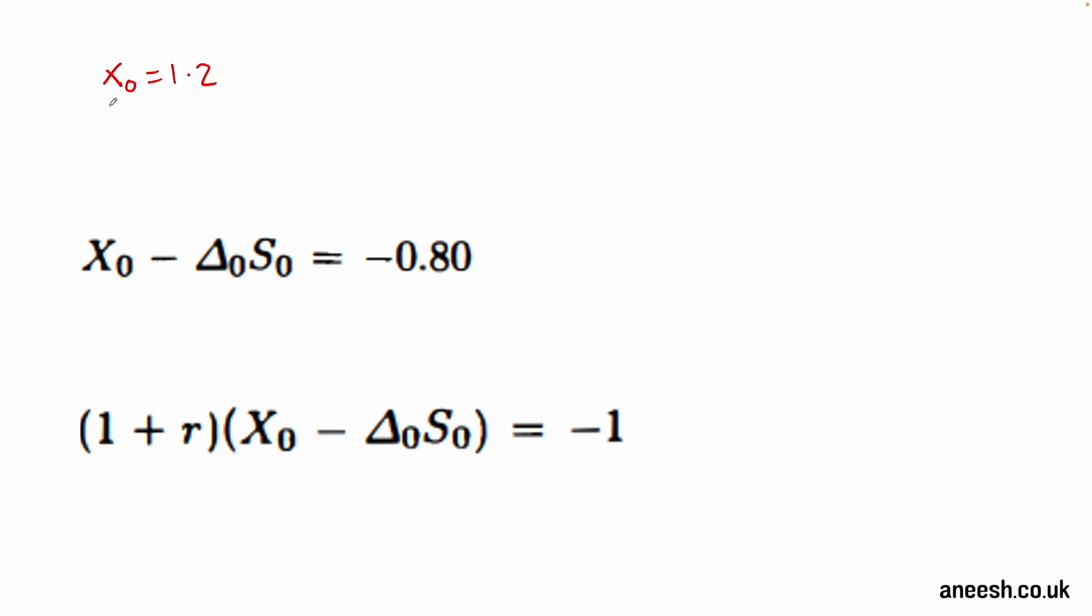As a result, delta 0 is 0.5 and S0 is still 4. We therefore need 2 to be able to buy half a stock. This means we need to borrow 0.8 from the money market at an interest rate of 1.25 to make up the remaining cash required.